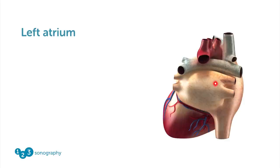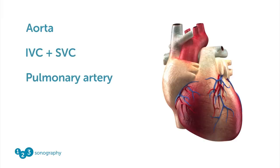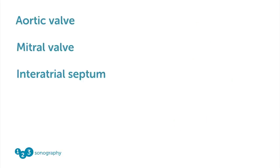The structures well-visualized by TEE include the left atrium, the left atrial appendage, the aorta, the IVC, the SVC, the pulmonary artery, the aortic valve, the mitral valve, and the interatrial septum.